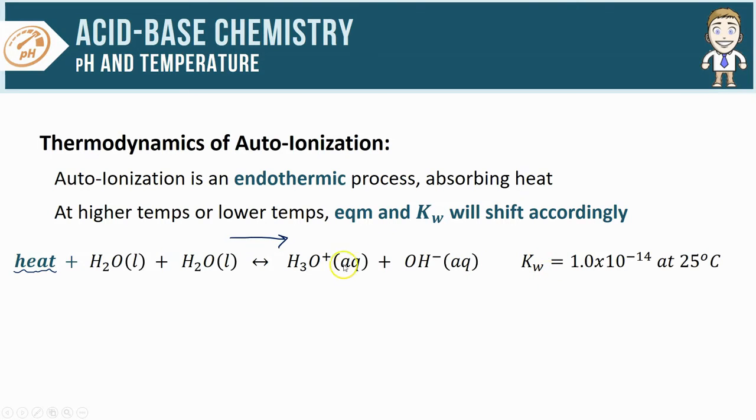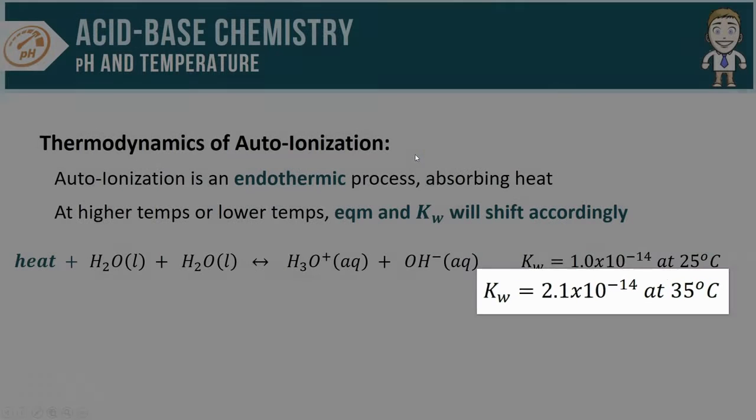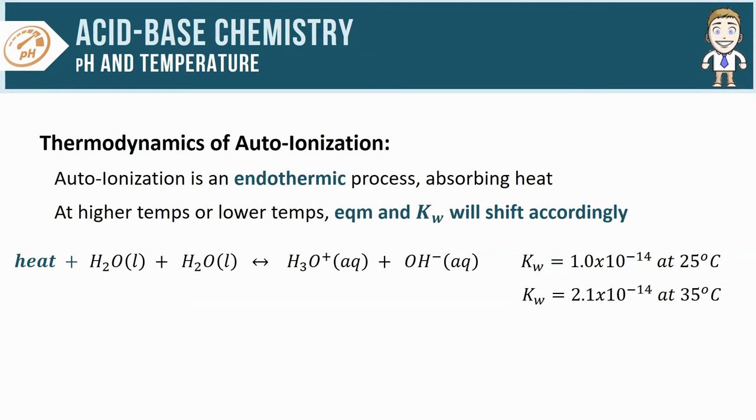The increase in the concentration of products will cause the K value to increase, which is why if you look up the K_w value at say 35 degrees Celsius, that's a higher temp so we have shifted to the right and increased our value for K_w. Here would go up to about 2.1 × 10^-14.